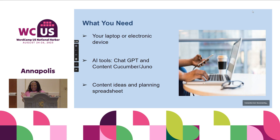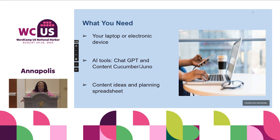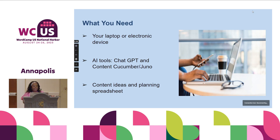What you're going to need today — I'm so happy so many people have their laptops or electronic devices open. We're also going to be using ChatGPT, the tried and true. I also found a really cool tool called Content Cucumber; they have an AI software called Juno. And then the content ideas and planning spreadsheet you just got — make sure when you sign up for it you hit confirm so it comes directly to you.